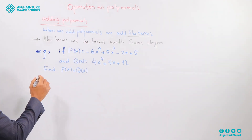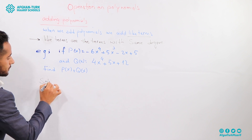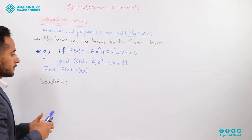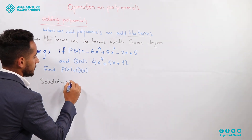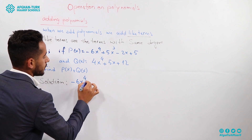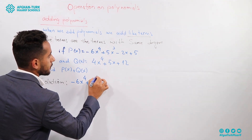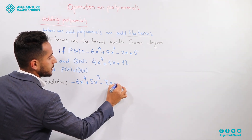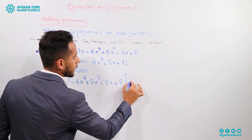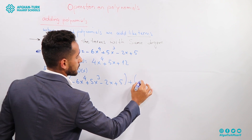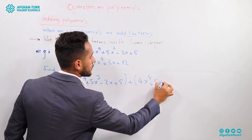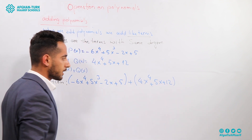In order to add these polynomials, first of all we have to write them down. So we have minus 6x to the power of 4 plus 5x to the power of 3 minus 2x plus 5 — this is the first polynomial. We are going to add it with the second polynomial: 4x to the power of 4 plus 5x plus 12.